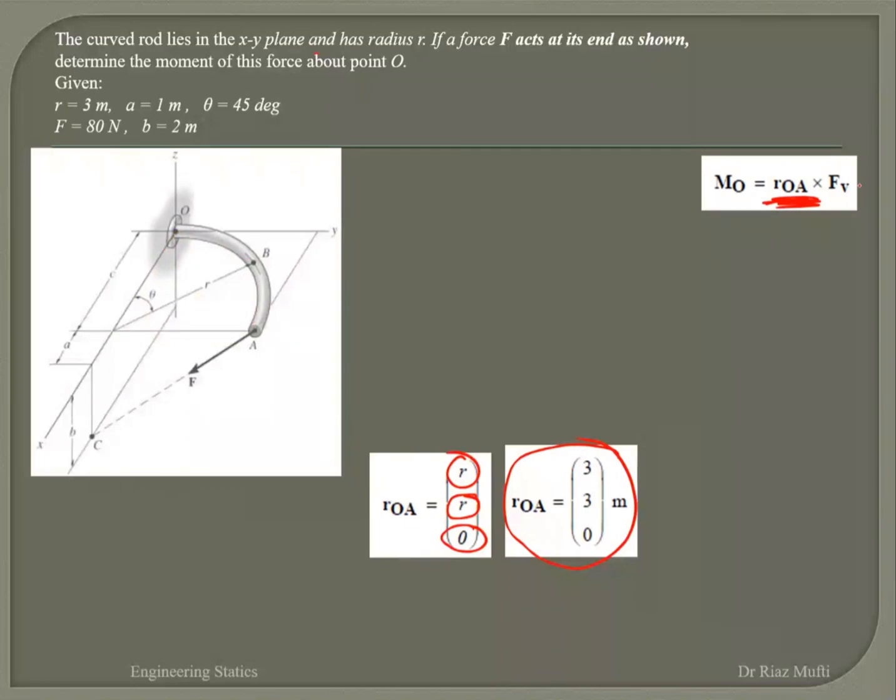Now I want my force in vector form. My force is not in vector form. It is 80 Newton. It's not in vector form. I need to convert it into vector form. So what do I need? Unit vector of AC. You need a unit vector and vector of force. Yes, so we need a unit vector.